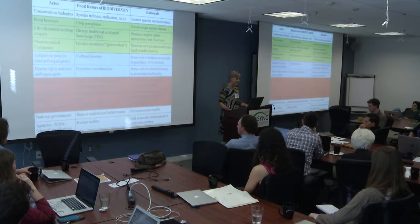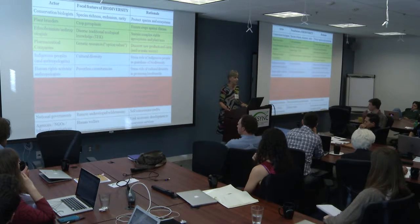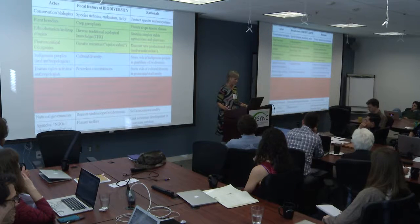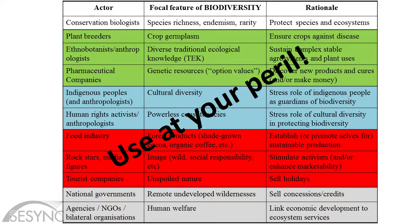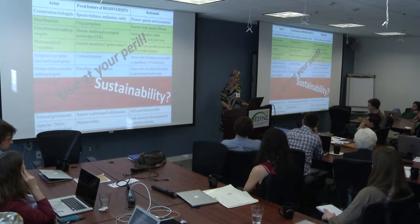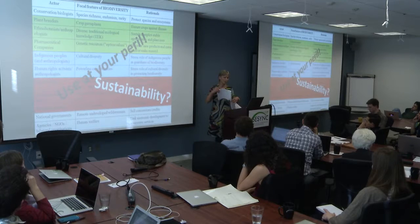Bilateral agencies, NGOs, and other development organizations—recognizing that you can't expect local communities to protect their biodiversity if they aren't able to feed themselves—would emphasize the links between human welfare and biodiversity and design projects linking the two. So when you use the term biodiversity, you use it at your peril. Everybody is going to understand you differently. The challenge I'd like to raise to the postdocs is: what about the term sustainability? I'm sure you could do a much better job dissecting all the different ways people use that term.